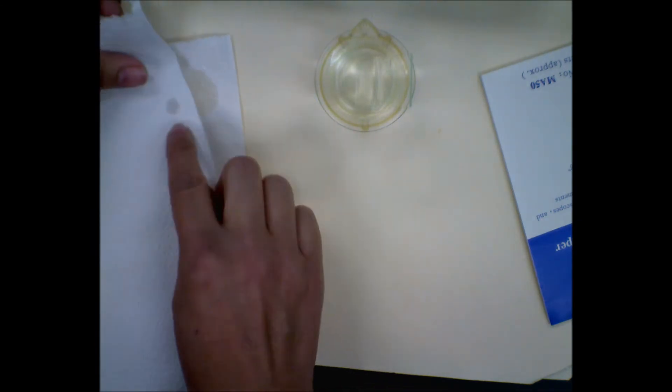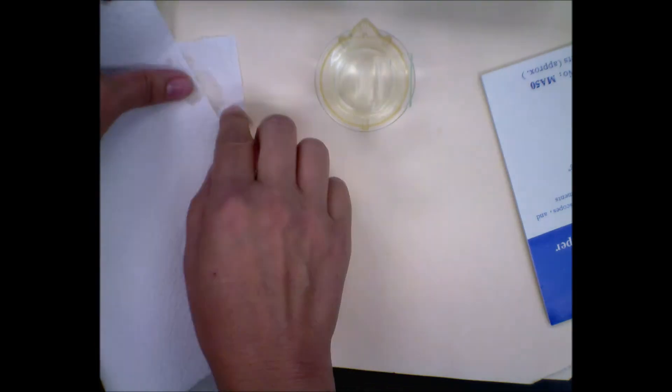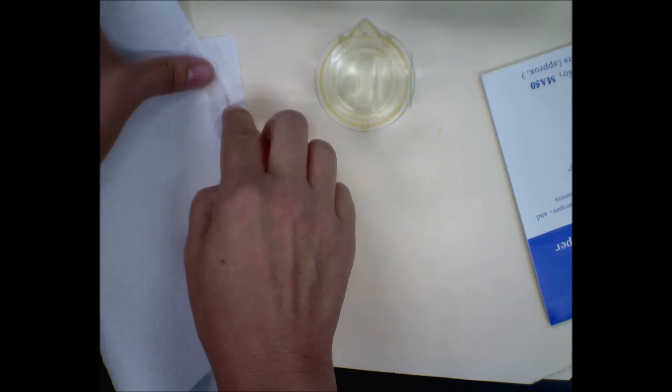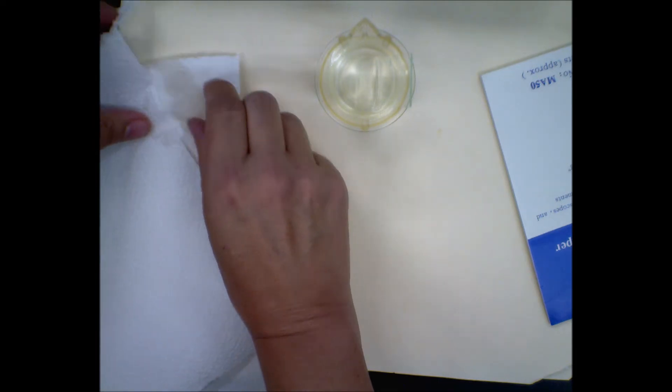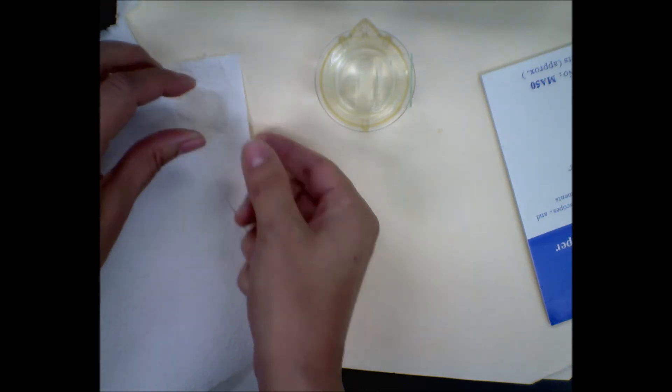Now, we said earlier that lens paper is the correct way to clean slides, and that's true, but you don't want to use all your lens paper up getting the gunk off. Use the lens paper for getting off the fuzzies and the last little bit of water.